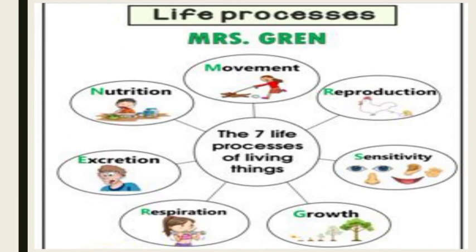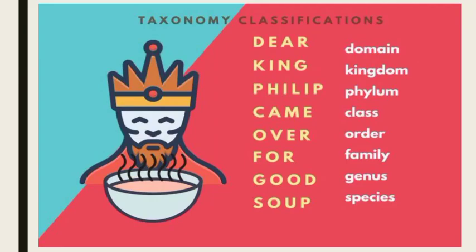M stands for Movement, R stands for Reproduction, S for Sensitivity, G for Growth, R for Respiration, E for Excretion, and N for Nutrition. In this way, we can learn the characteristics of living organisms.